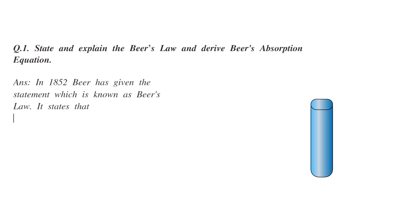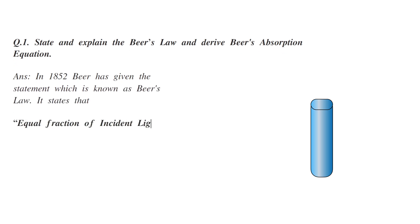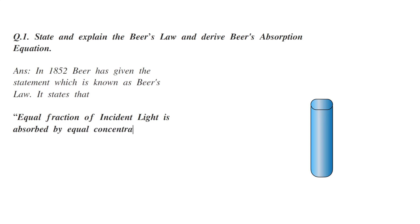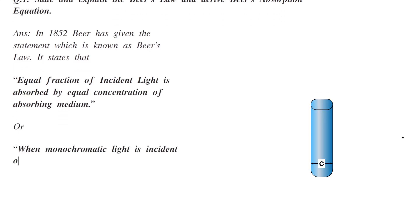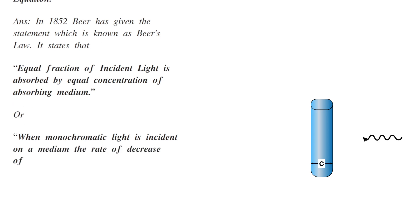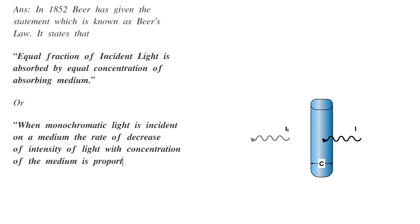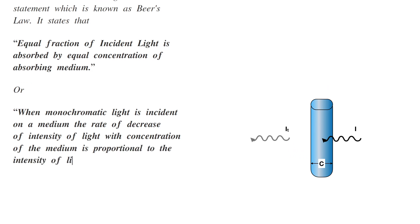It states that equal fraction of incident light is absorbed by equal concentration of absorbing medium, or when monochromatic light is incident on a medium, the rate of decrease of intensity of light with concentration of the medium is proportional to the intensity of incident radiation.